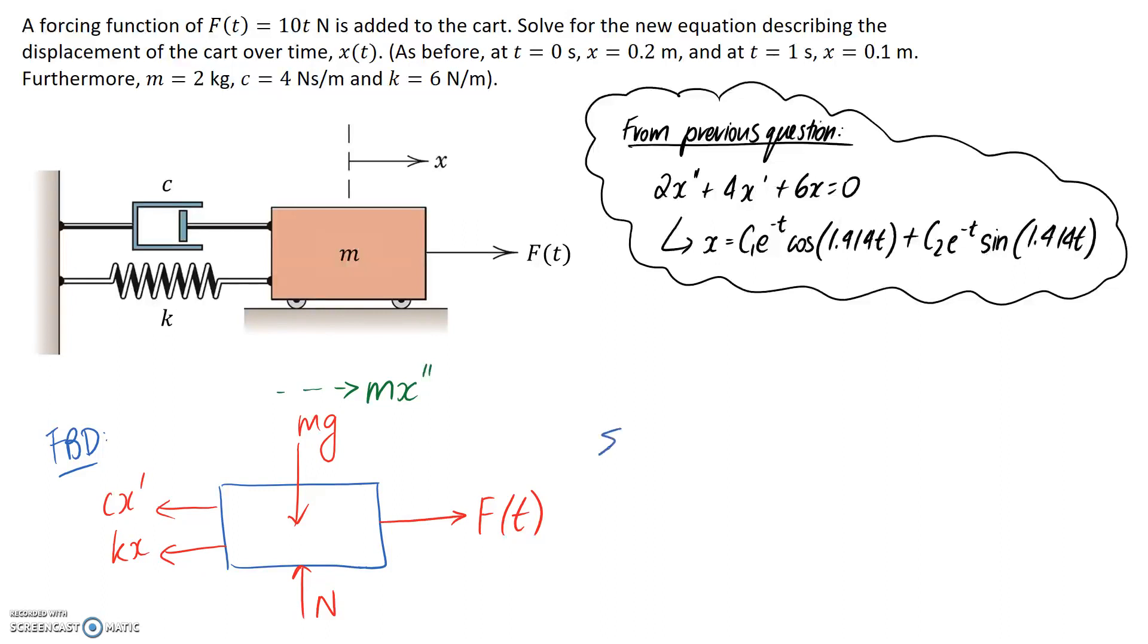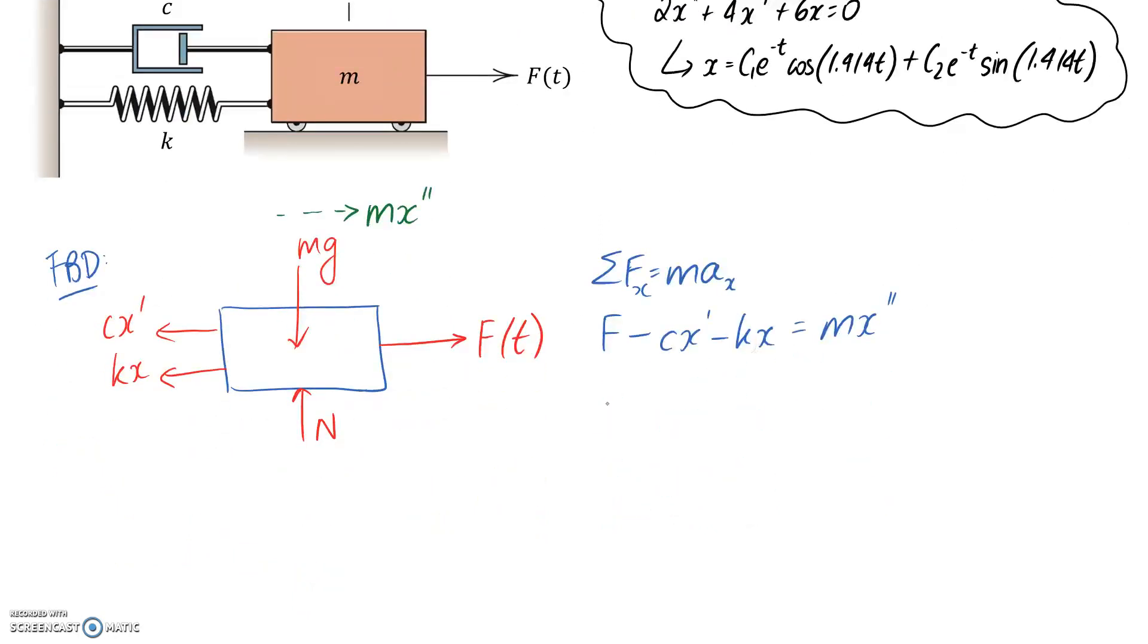If we now apply our equation, summing the forces in the x direction to be equal to the mass times acceleration in the x direction, all that's going to change is we've got this extra force acting in our diagram. So it's f, these are in the negative direction, so minus cx dash minus kx. We know it's equal to the mass times acceleration which is drawn in the positive x direction here, so it goes positive in the equation.